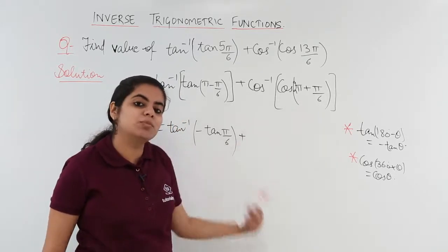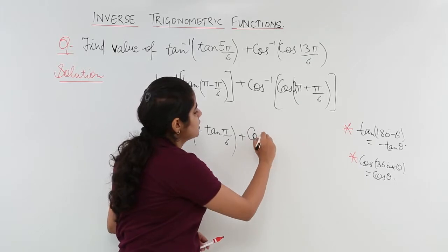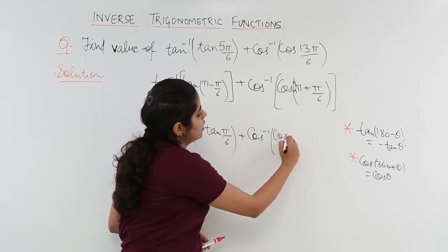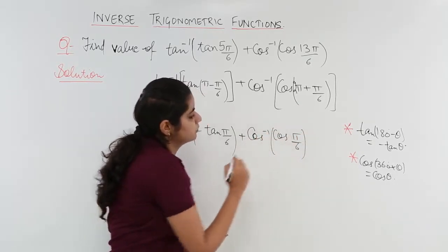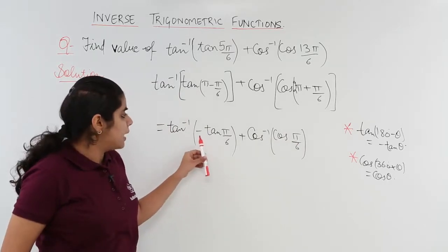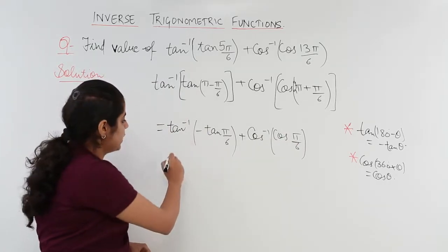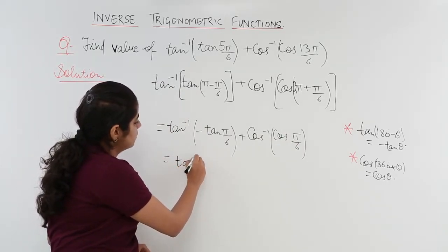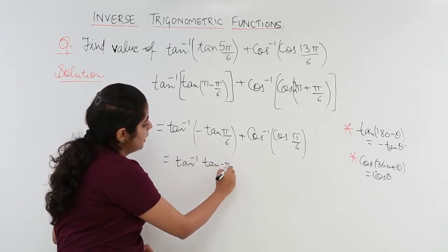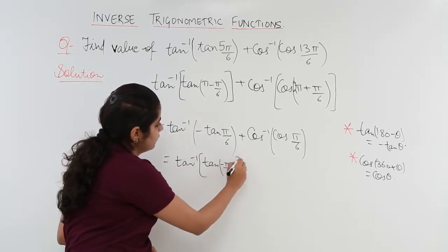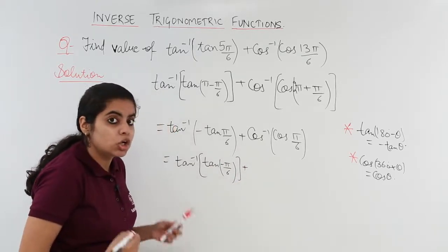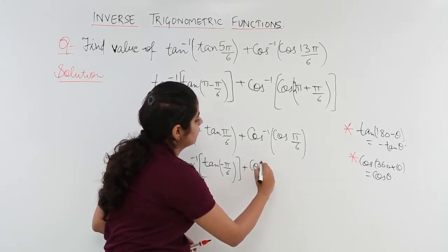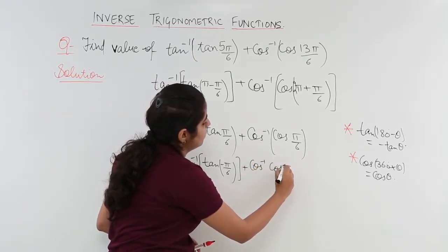Tan inverse, tan 180 minus theta is minus tan theta. What do you mean by that? It means minus tan π by 6. The plus follows as it is. Cos 360 plus theta is plus cos theta. So cos inverse outside and cos theta.